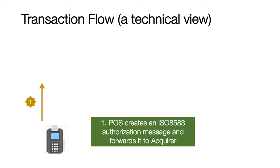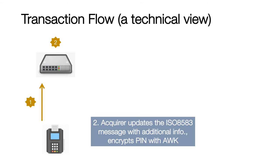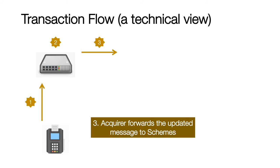Generally, a POS creates an ISO 8583 message. You might think — what about an ATM? An ATM creates a proprietary format message, not necessarily an ISO 8583. An acquiring switch is an application software used by acquiring banks which does end-to-end authorization processing for acquirers, starting from terminal management, terminal interface management, scheme interface, key management, etc. When the acquiring switch gets the message from the POS, it validates the message, adds some data elements to it, and then encrypts any PIN it received from the terminal into an acquired working key that it shares with the schemes. After doing all this processing, it transmits the message to the schemes.